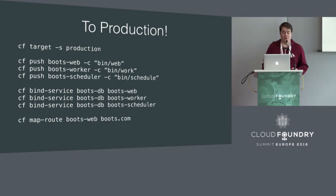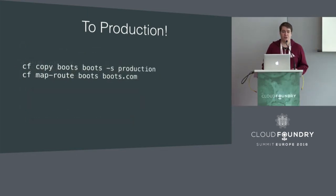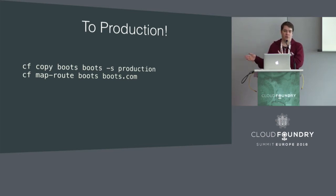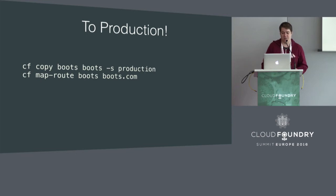In v3, we can do better. We could just copy a droplet over to the production space - the exact same droplet, exact same bits that you've tested, that you've run through CI. You don't even need the code on your development machine; you just need access to the Cloud Foundry. You can move the application from your development environment to your staging environment to your production environment with no staging. Much, much nicer.